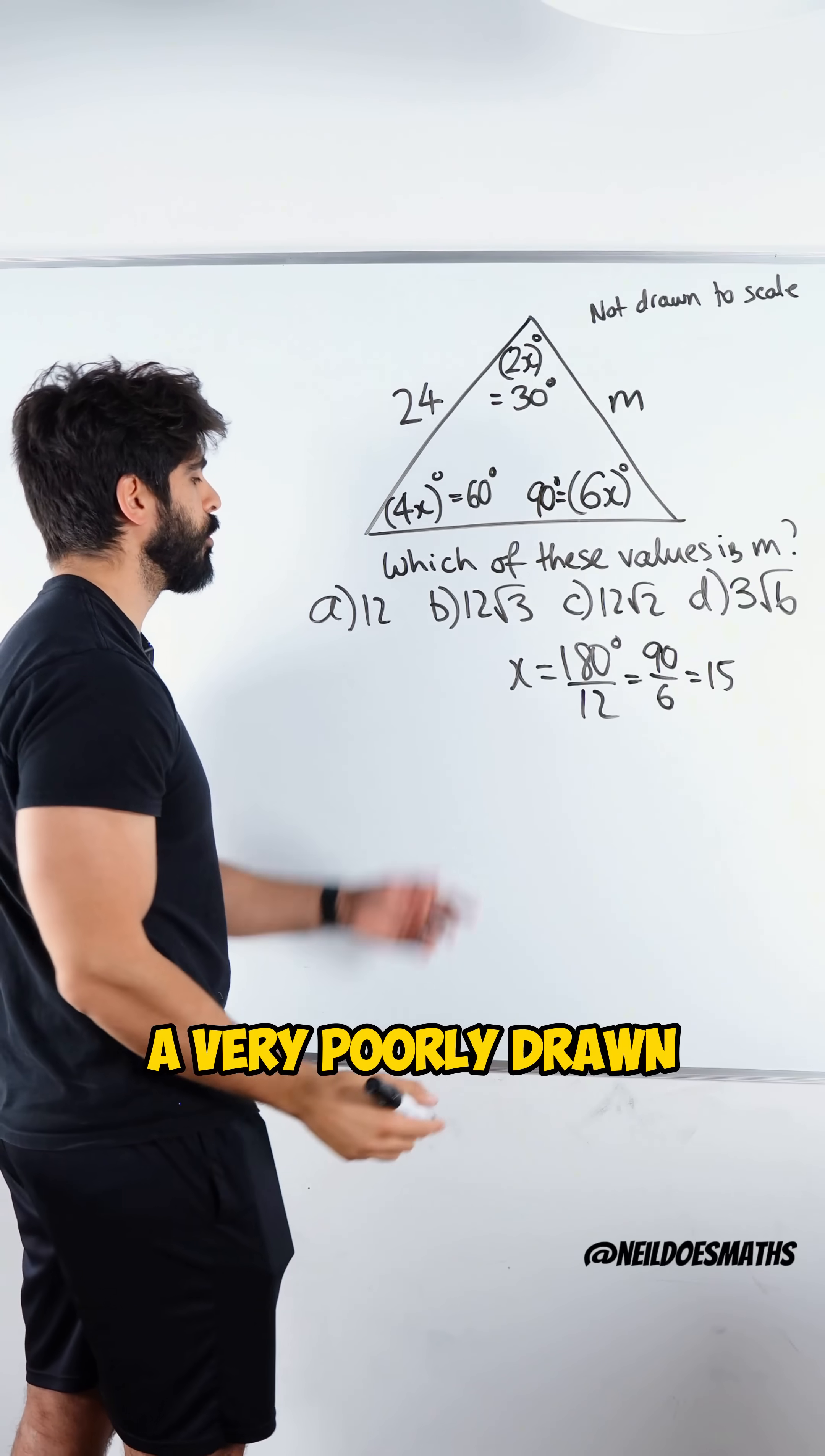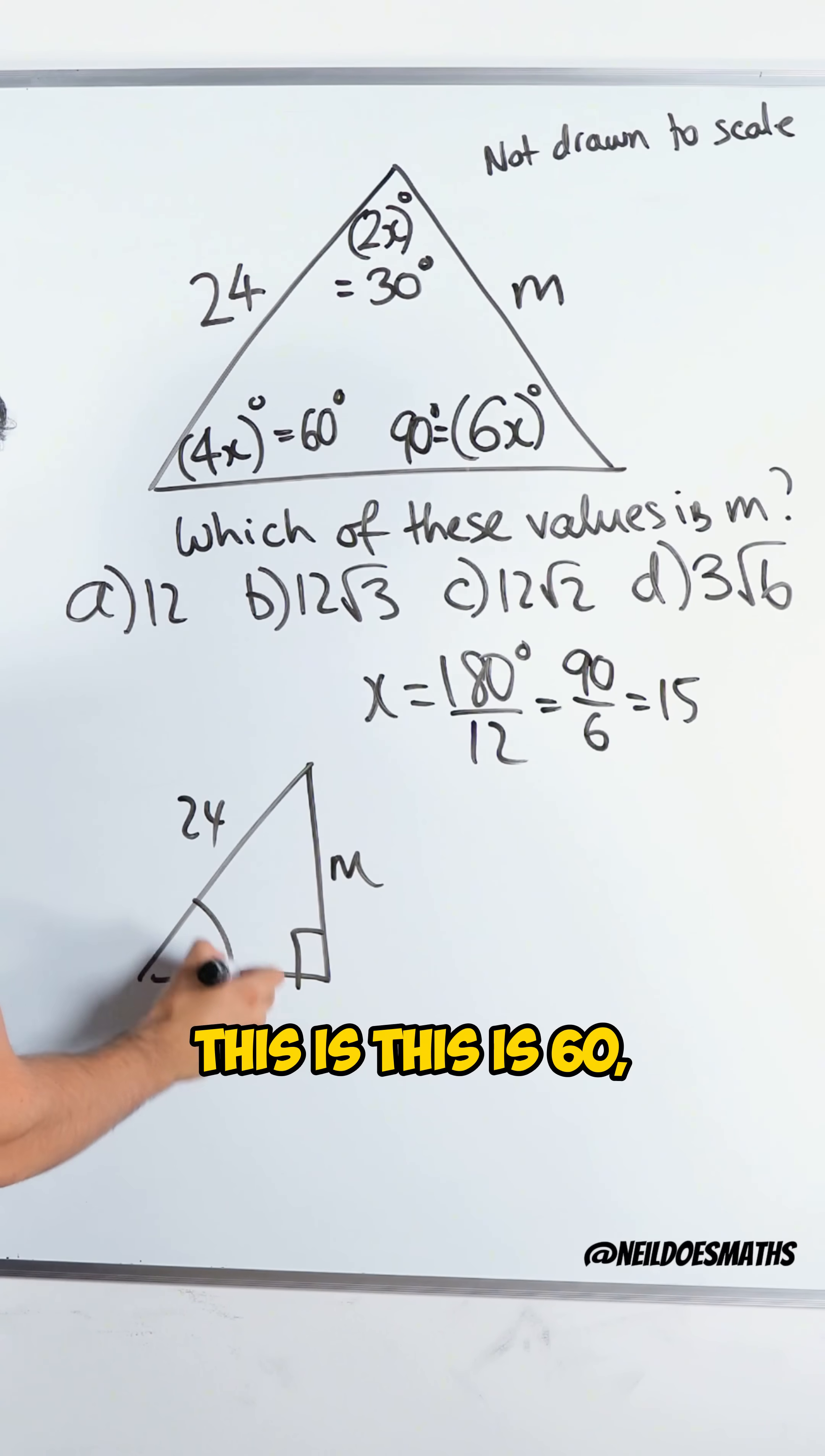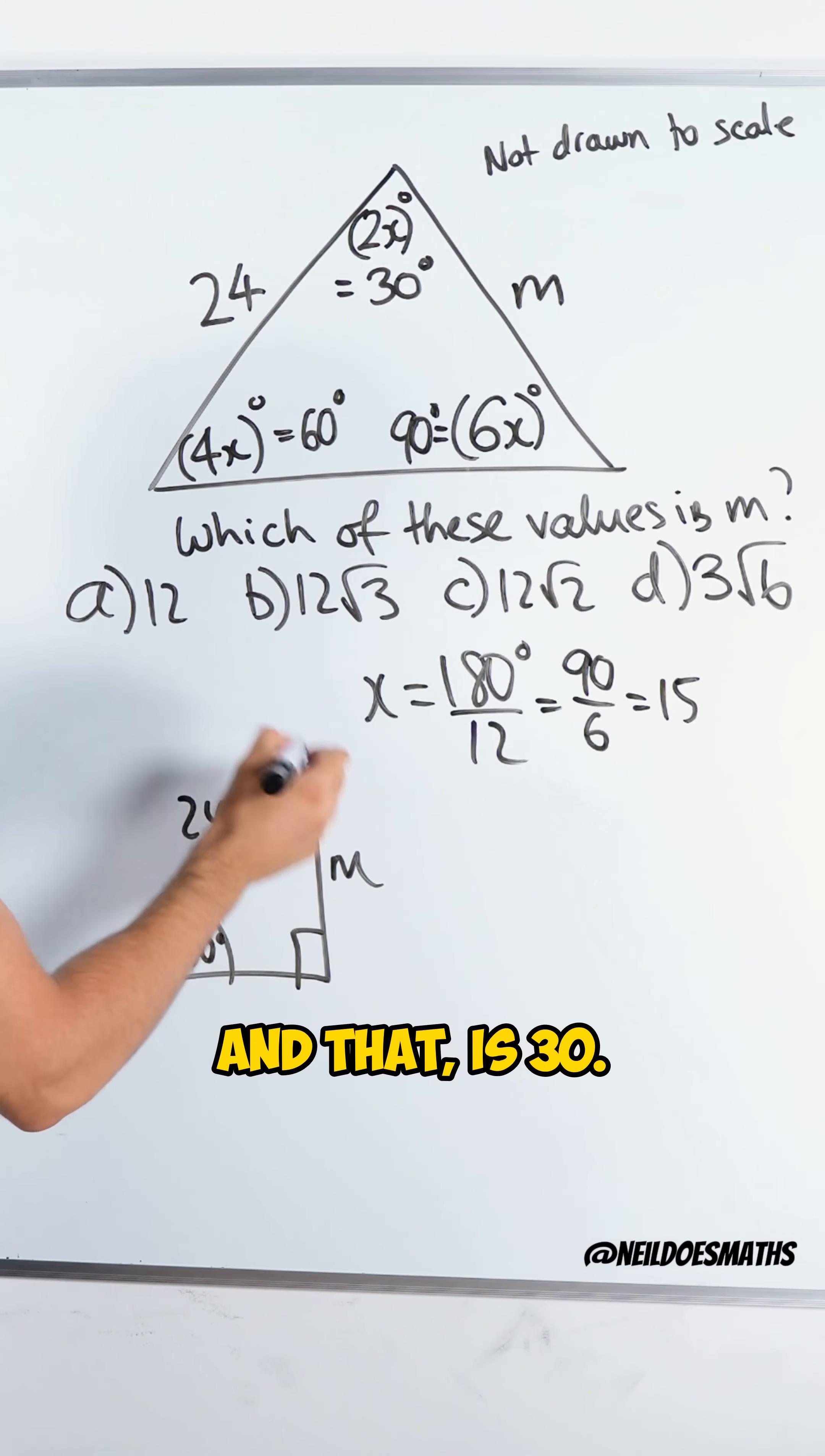Which means this is a very poorly drawn right-angled triangle with 24 in the hypotenuse. This is m and this is 60 and that is 30.